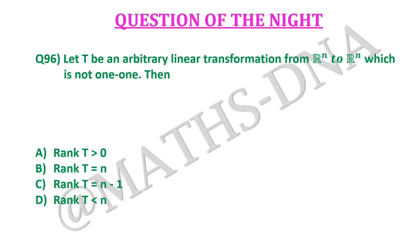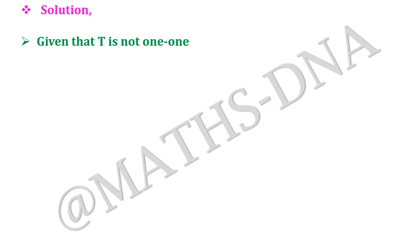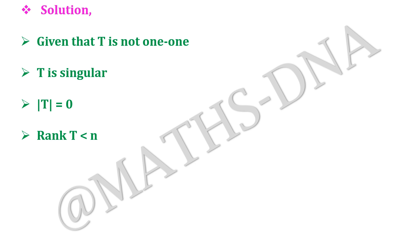You can pause the video here and try it by yourself. Now let us solve it. In the question, it is already given that T is not one-to-one, which implies that T is singular, and which implies that the determinant of T is 0. This gives us that the rank of T is less than n, hence the correct answer is option d.